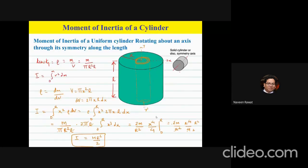Finally, we did the case for a cylinder, looking at its rotation through the center symmetry axis. Along this axis, the cylinder looks the same in any direction — if you move one centimeter in this direction or that direction, essentially the problem is the same.